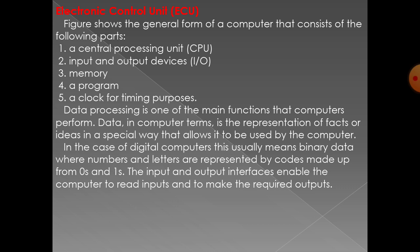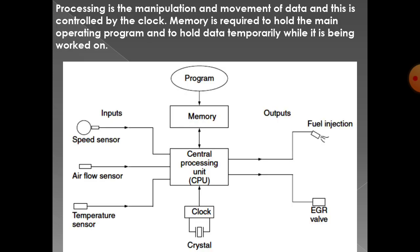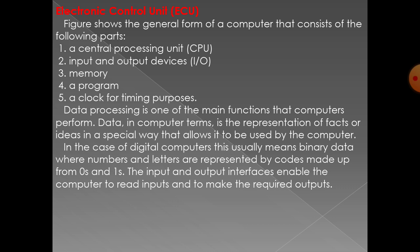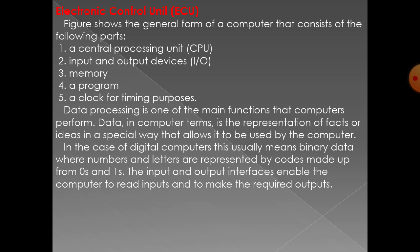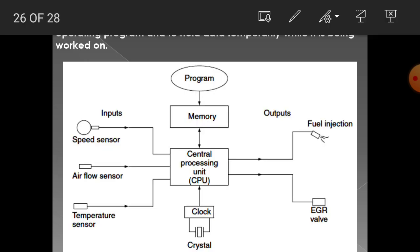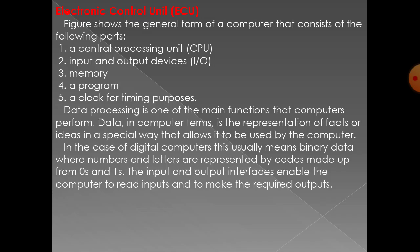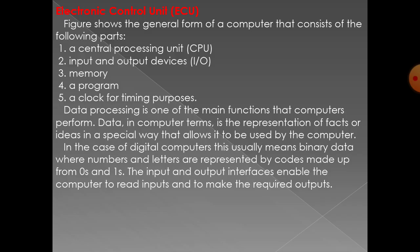Regarding the electronic control unit: the two main parts are the ECM and the ECU. A figure shows the general form of a computer consisting of the following parts: a central processing unit, input and output devices, memory, a program, and a clock for timing purposes.